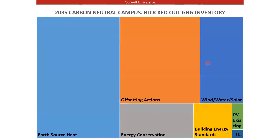To summarize the plan at a high level: this block is essentially a pie chart based on actual reduction expectations from various projects — the whole block represents our current greenhouse gas emissions. Earth source heat is obviously a huge piece. Energy conservation and building energy standards, wind, water, and solar projects, existing solar and hydro, and offsetting actions for commuting and air travel — those are all areas where we each have a role to play in blocking out those emissions.